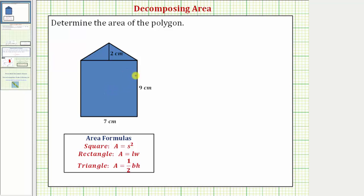Notice how we can divide the five-sided polygon, called a pentagon, into a rectangle that has dimensions nine centimeters by seven centimeters.